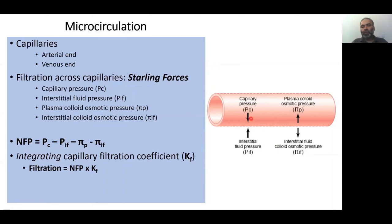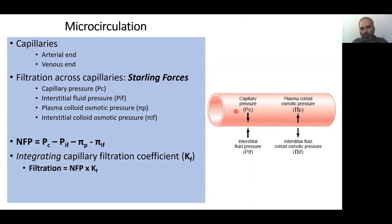The capillary pressure arrow points outward toward the interstitium — blood exerts pressure on the wall and tries to push fluid out, so capillary hydrostatic pressure is an outward pressure. Interstitial fluid pressure is also a hydrostatic pressure, but it acts on the outside wall and tries to push fluid from the interstitium back into the capillary.